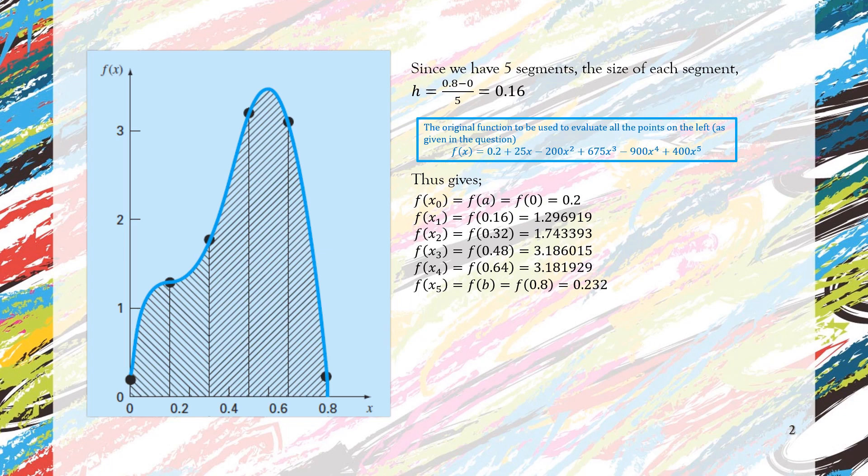It means that we have 6 points at x = x₀ until x₁, x₂, x₃, x₄, and x₅. So we calculate all the values of the function at each point, of course by substituting the value of x into the original function given.